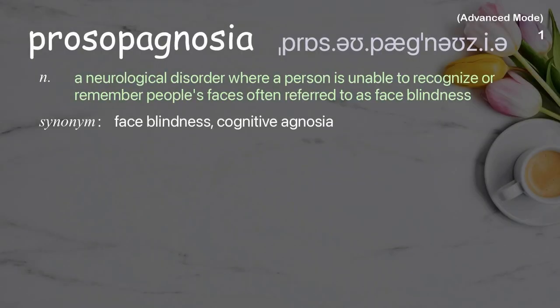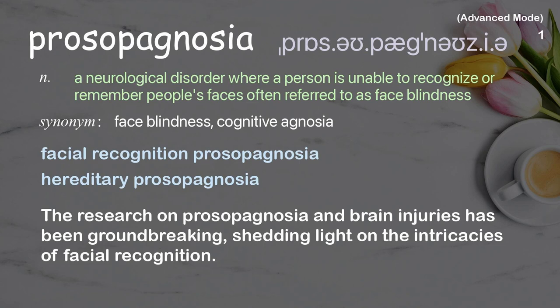Prosopagnosia: a neurological disorder where a person is unable to recognize or remember people's faces, often referred to as face blindness. Examples: facial recognition prosopagnosia, hereditary prosopagnosia. The research on prosopagnosia and brain injuries has been groundbreaking, shedding light on the intricacies of facial recognition.